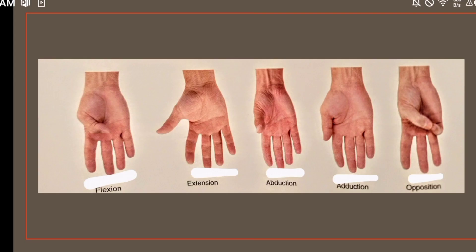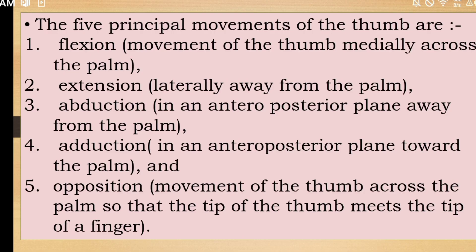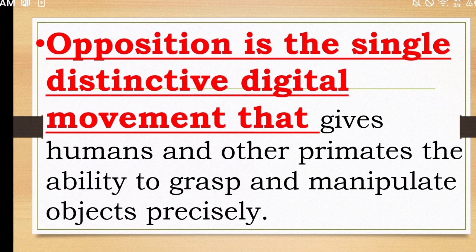These muscles are very important for grip. The thumb is positioned at right angles to the other digits. In this picture, there are five principal movements of the thumb: flexion, extension, abduction, adduction, and opposition. Flexion is movement of the thumb medially across the palm. Extension is movement of the thumb laterally away from the palm. Abduction is movement of the thumb in an anterior-posterior plane away from the palm. Adduction is movement in an anterior-posterior plane towards the palm. Opposition is movement of the thumb across the palm so that the tip of the thumb meets the tip of the finger. Opposition is the single most distinctive digital movement that gives humans and other primates the ability to grasp and manipulate objects precisely.